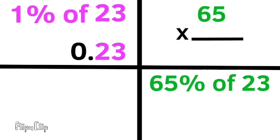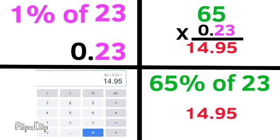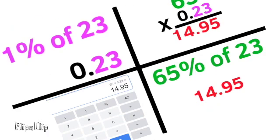How about 65% of 23? That's 65 times 0.23, which equals 14.95. 65% of 23 is 14.95.